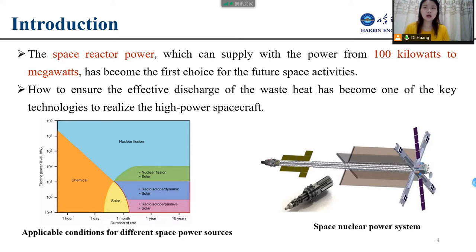For such high power, how to ensure the effective discharge of waste heat has become one of the key technologies to realize high-power spacecraft. We can see from the picture of the space nuclear power system that the volume and area of a conventional radiator are large and do not meet the requirements of a compact system. In this case, the liquid droplet radiator is proposed as a new type of radiator.